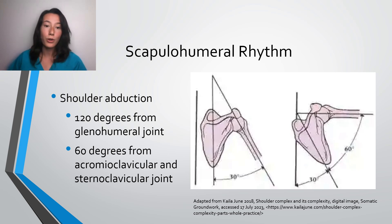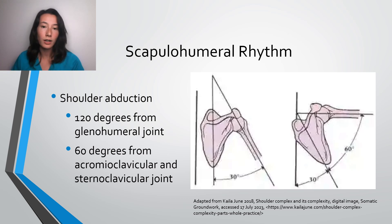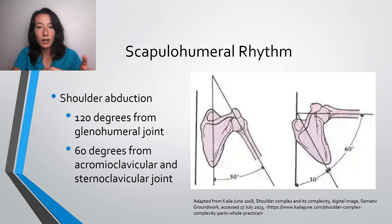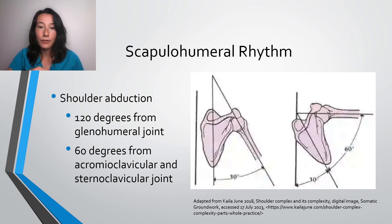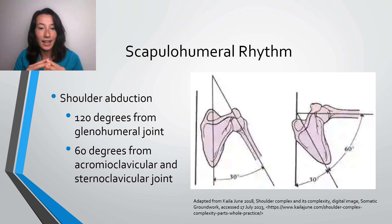From zero to 30 degrees of shoulder abduction, the only movement is really coming from the GH joint. Now when we go from 30 to 180 degrees, this is when the acromioclavicular and sternoclavicular joints come into play. From 30 to 180 degrees there is about a two-to-one ratio of movement: two parts coming from the glenohumeral joint, and one part coming from both the AC and SC joints. So for every 20 degrees of movement from the GH joint, there are 10 degrees of movement coming from the combination of the AC and SC joints.